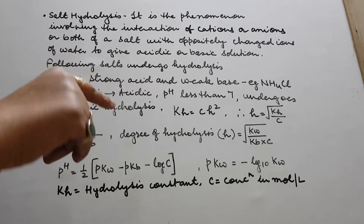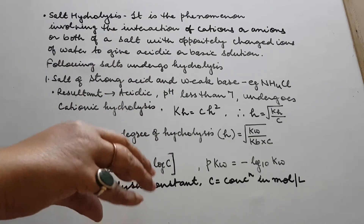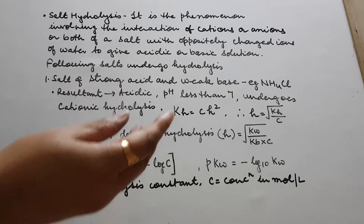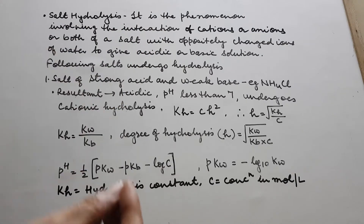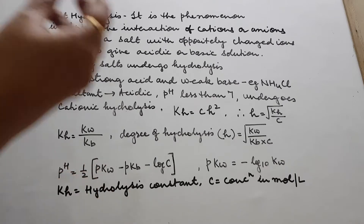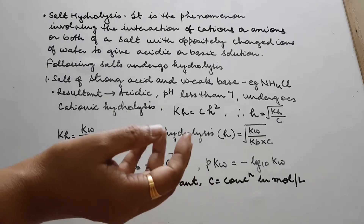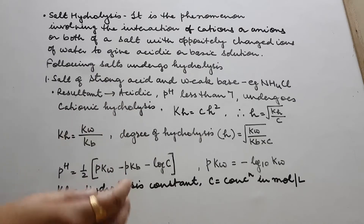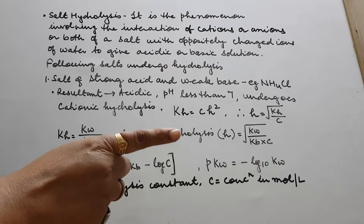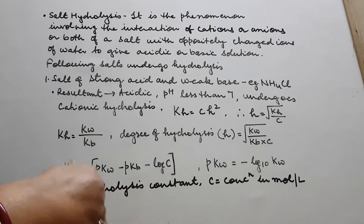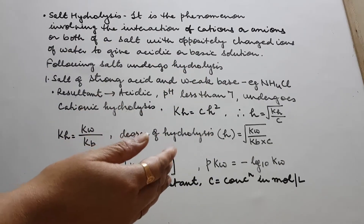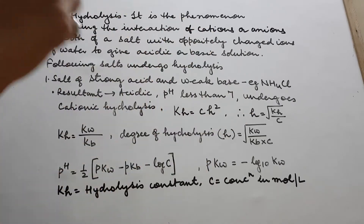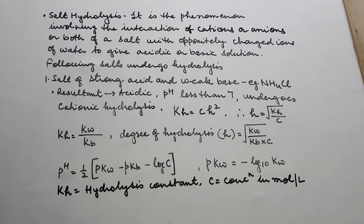Hydrolysis is the phenomenon where we dissolve a salt in water and its ions react with oppositely charged ions present in water, giving rise to a resultant solution that is either acidic or basic in nature — not neutral. pH is not exactly 7; it is either less than 7 (acidic) or more than 7 (basic), but not exactly 7.